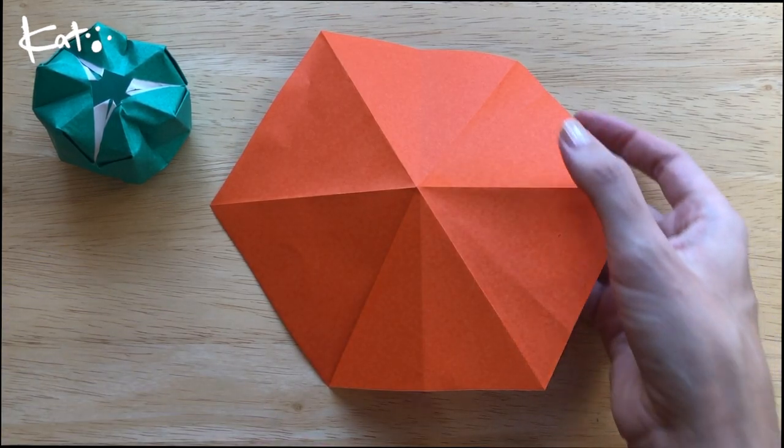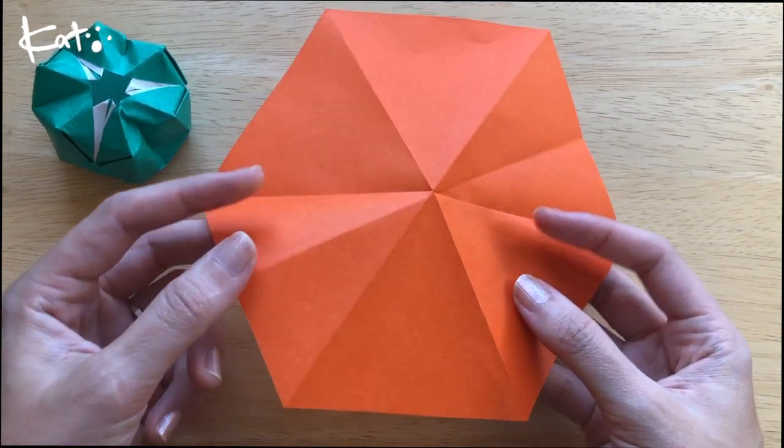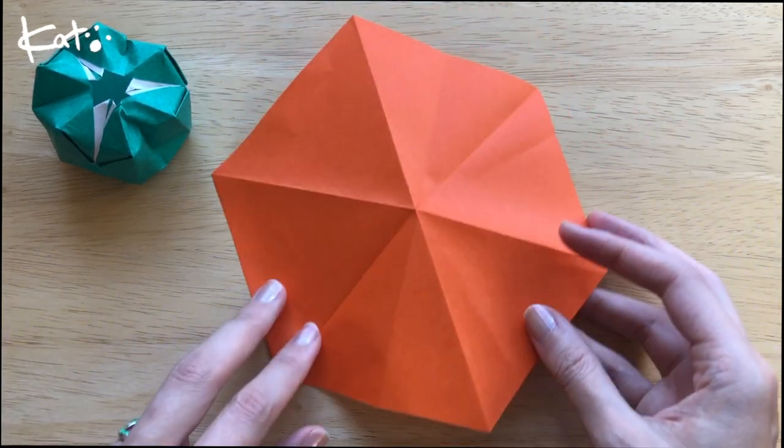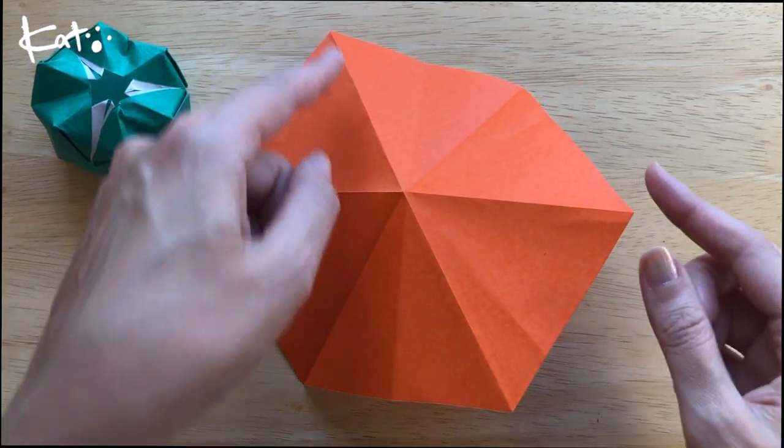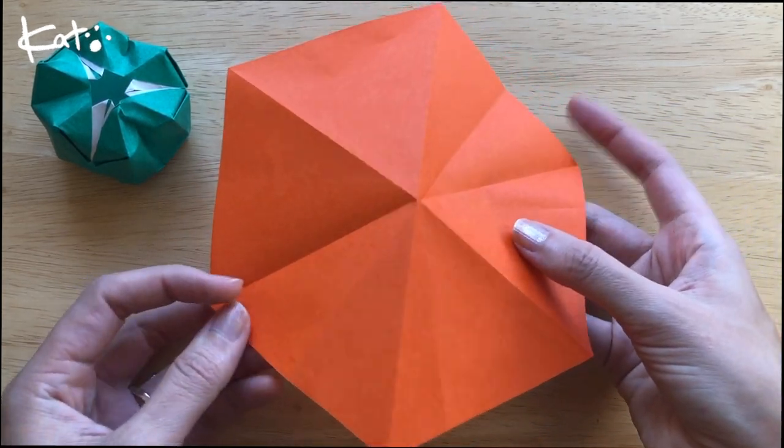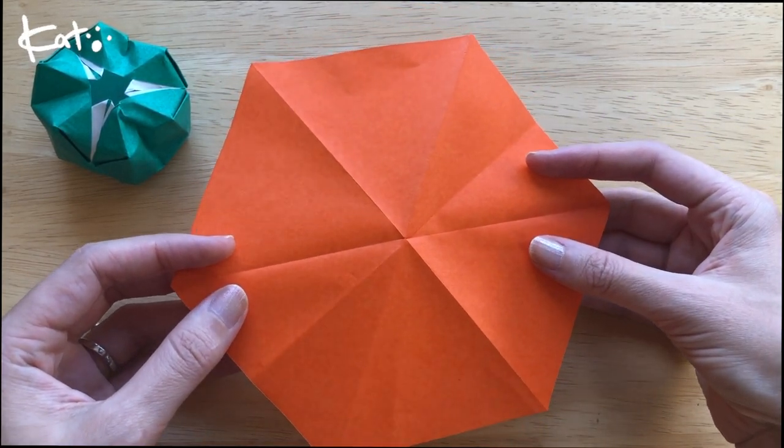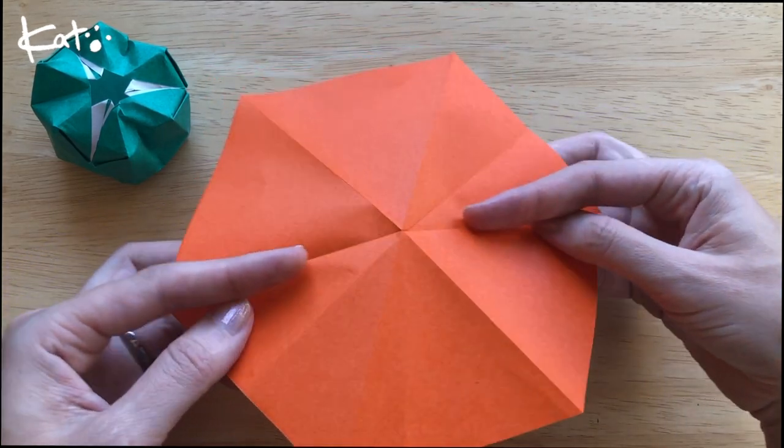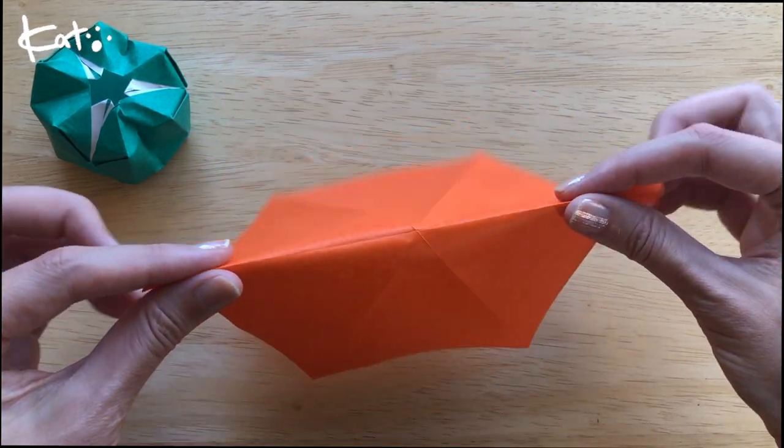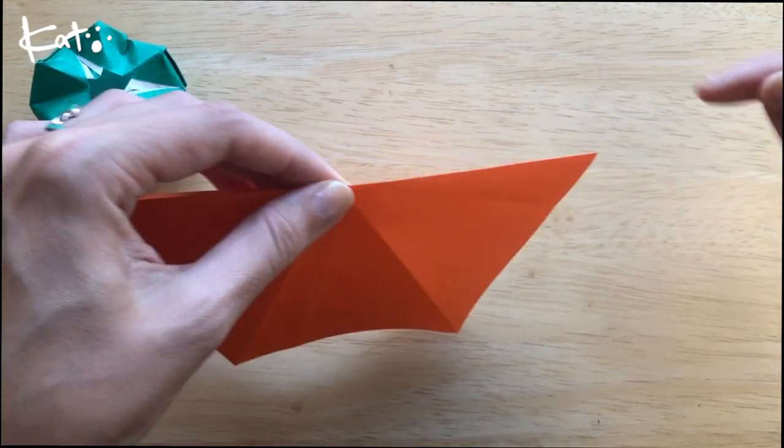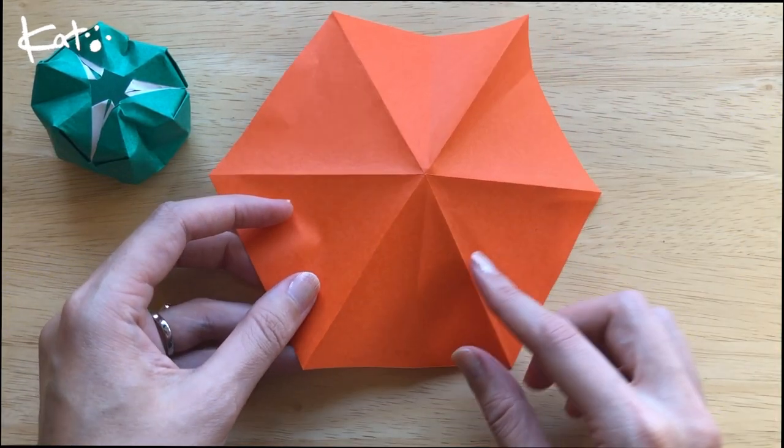Some of these are already mountain folds so I'm going to start with the points. I already have two sets of mountain folds but there is one here that is a valley fold that should be a mountain fold. So let's just fold it over. We're going to fold it in reverse, turn that valley fold into a mountain fold. Now all of these points are mountain folds.